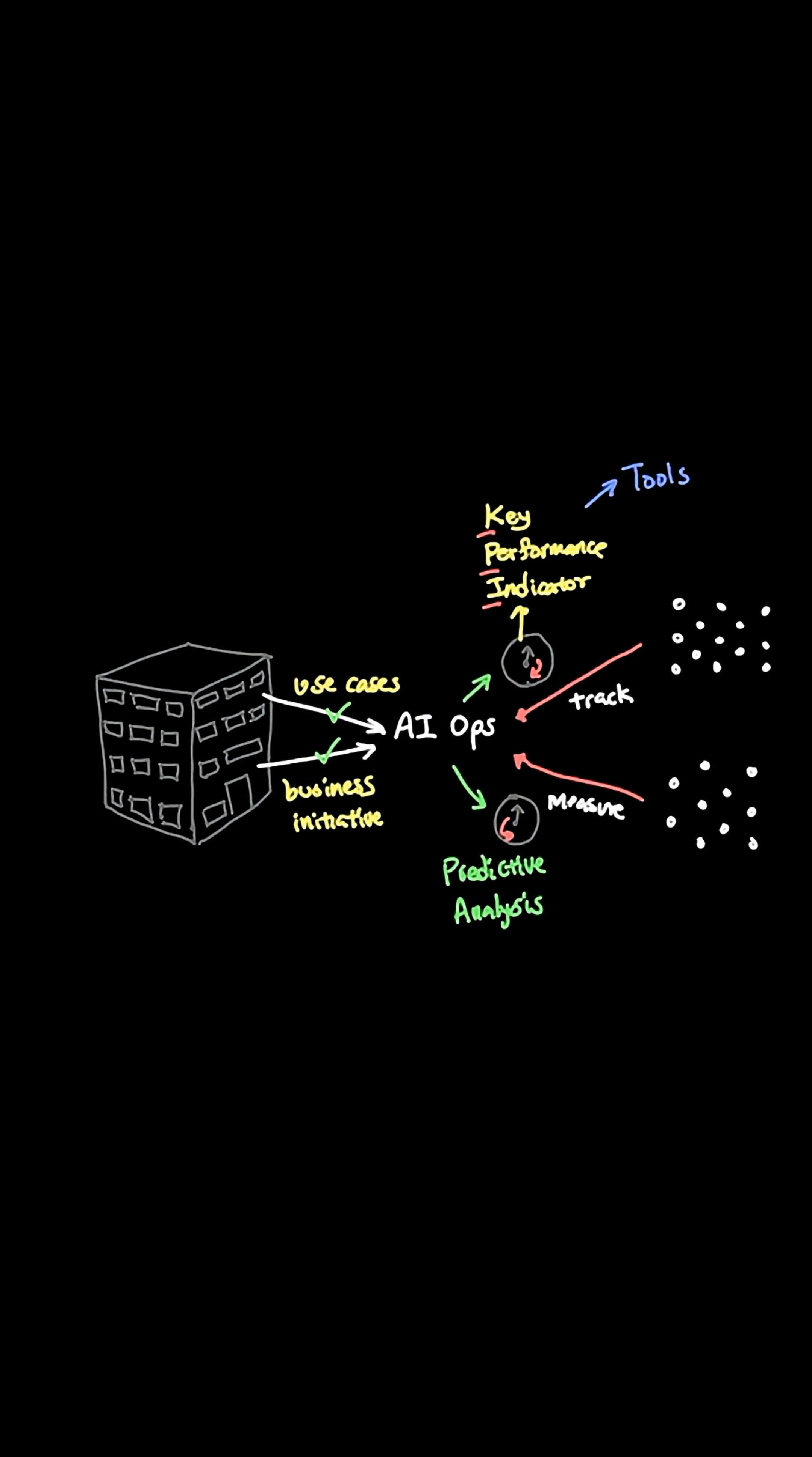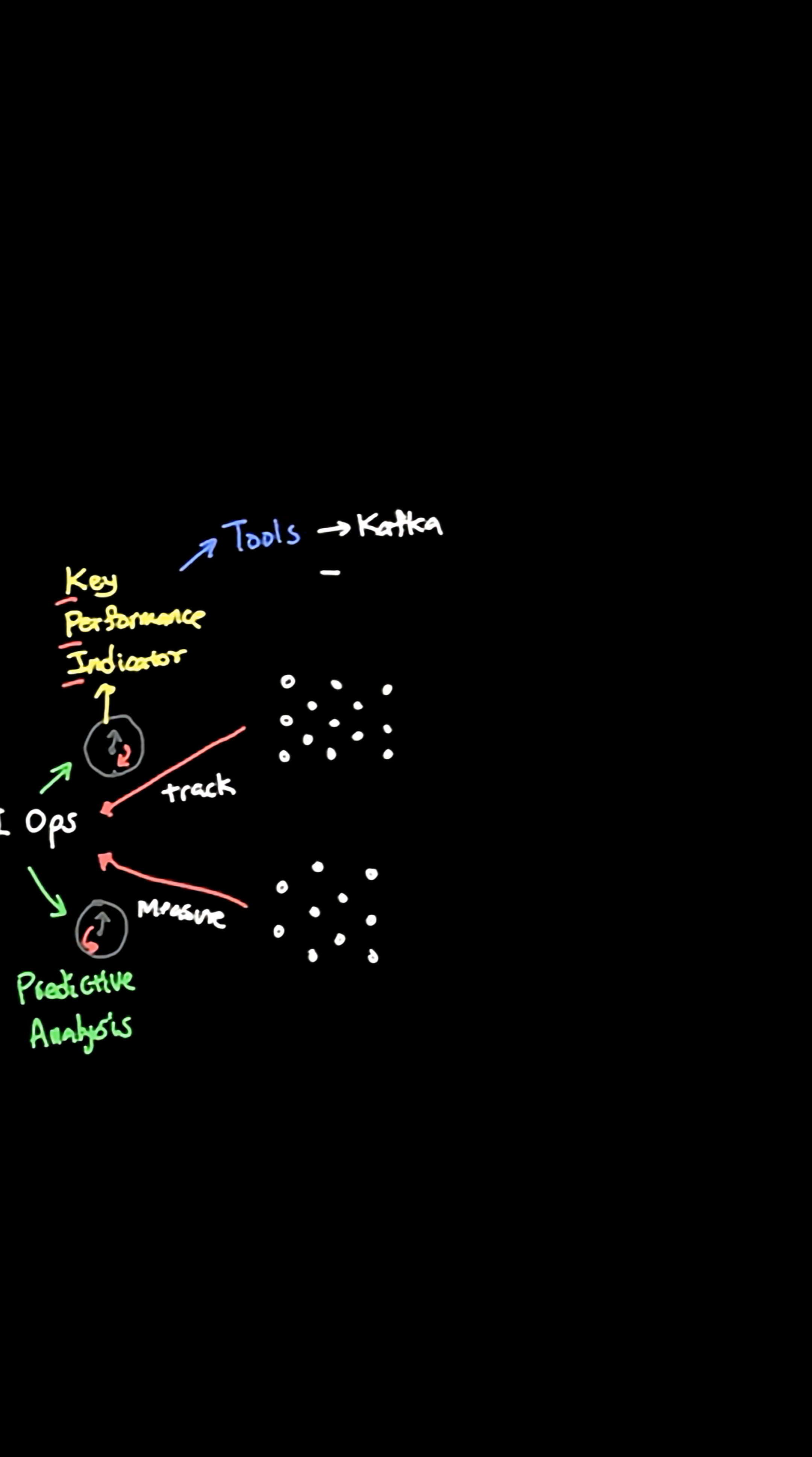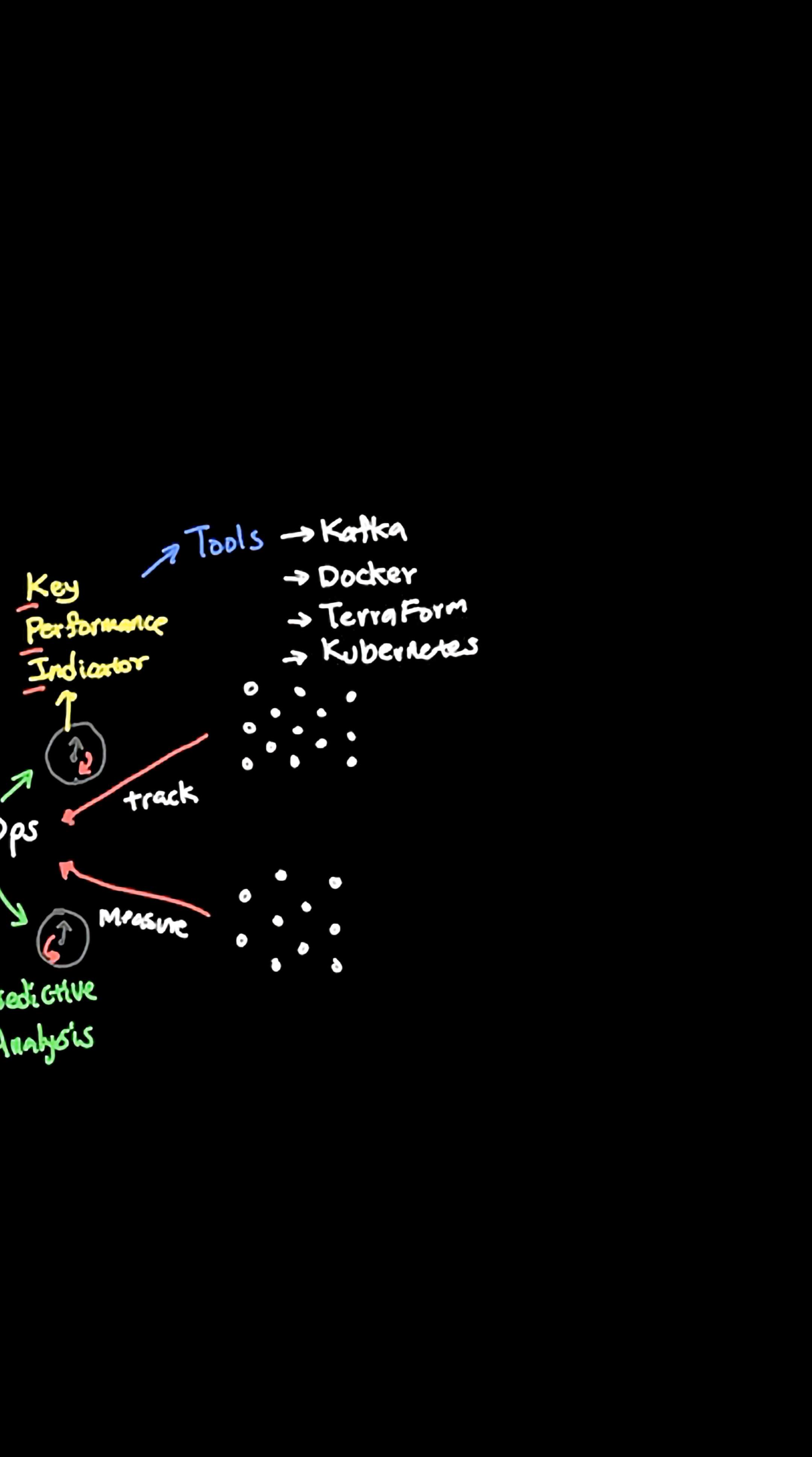Understanding what tools exist and what tools can help track KPIs is the next step in the AIOps roadmap. Tools like Kafka, Docker, Terraform, and Kubernetes all offer a wide range of log files and system logs that can be used to assess the current infrastructure.